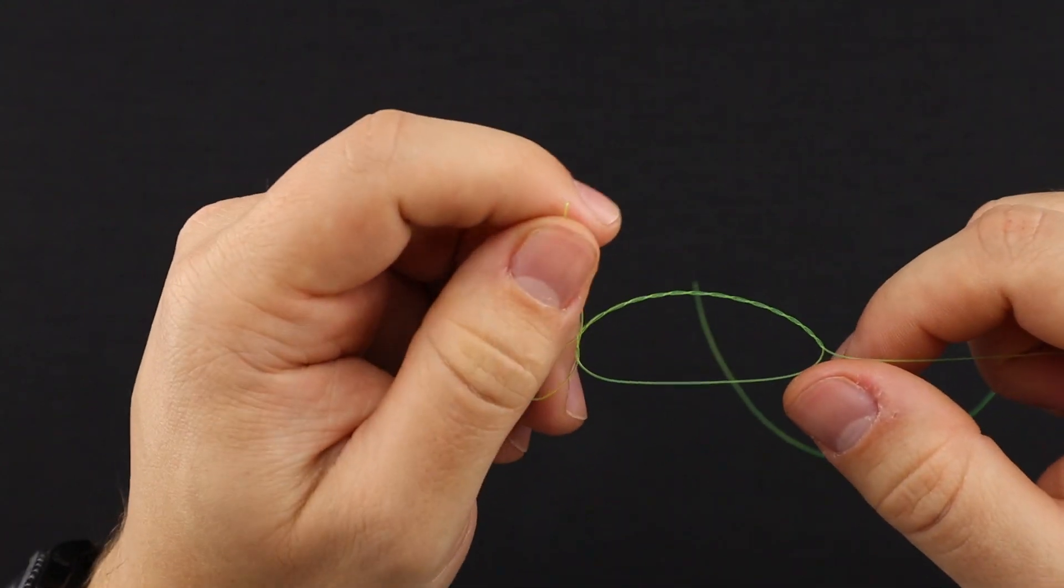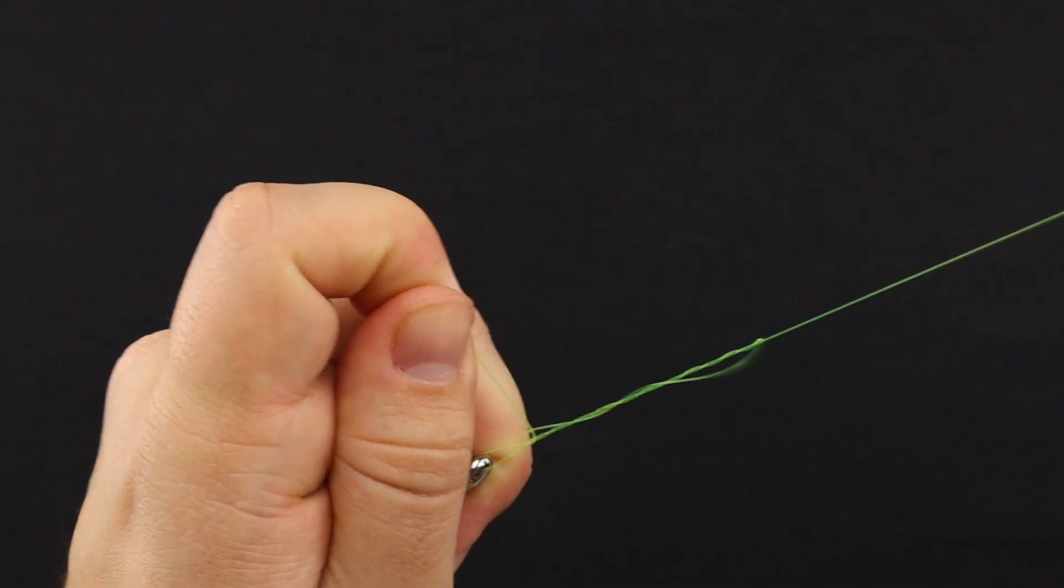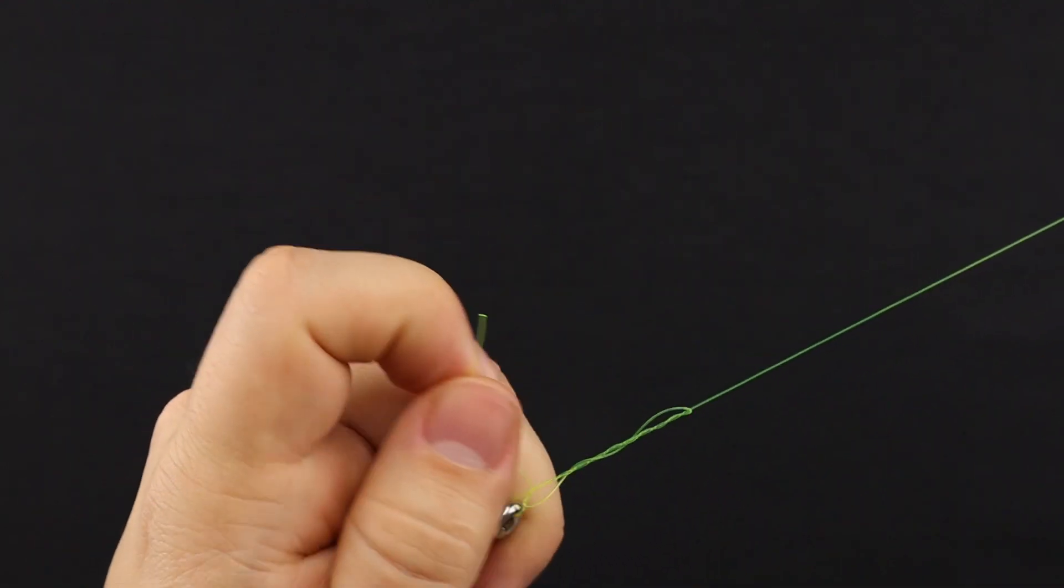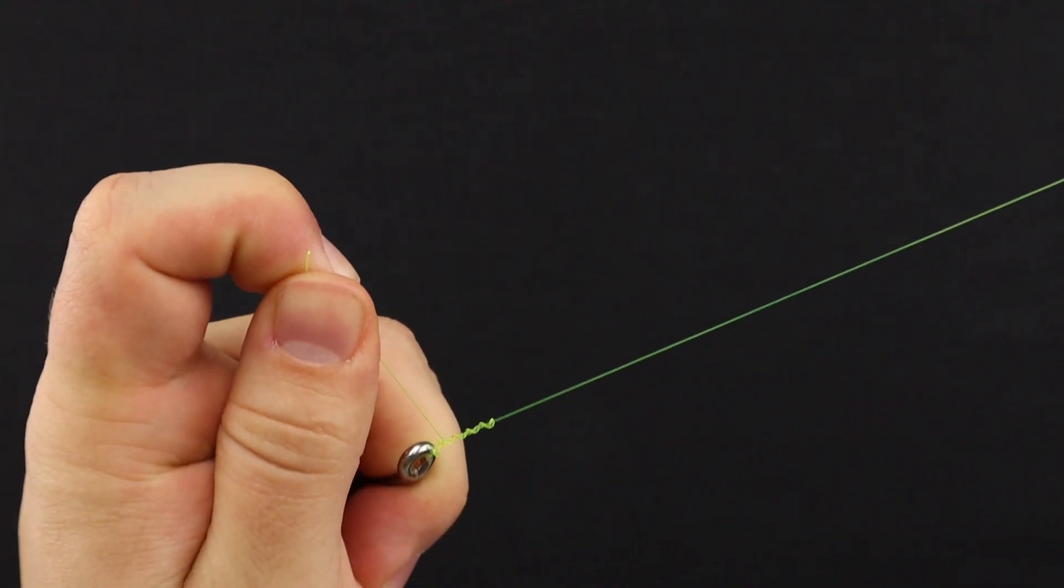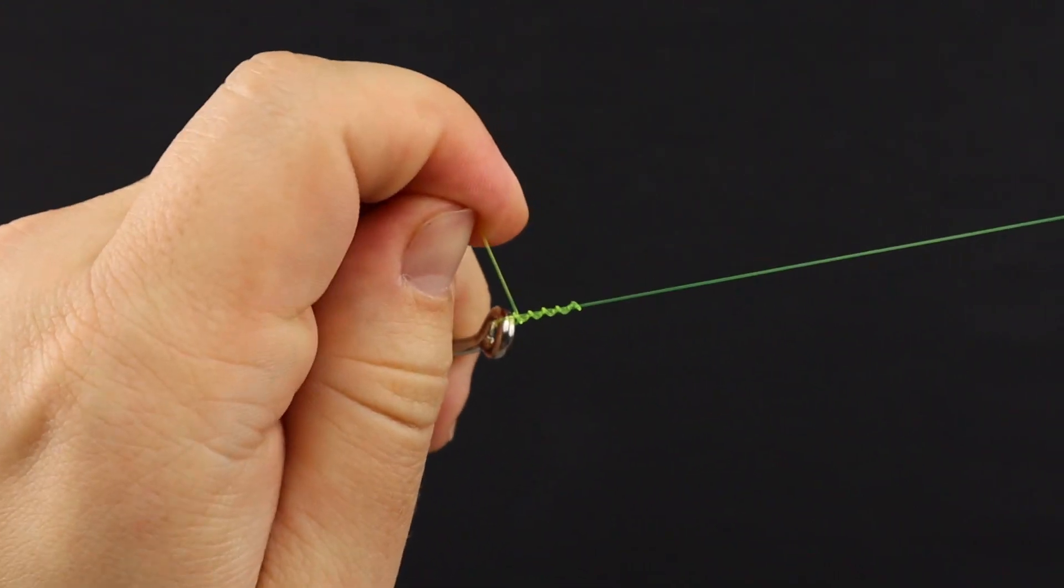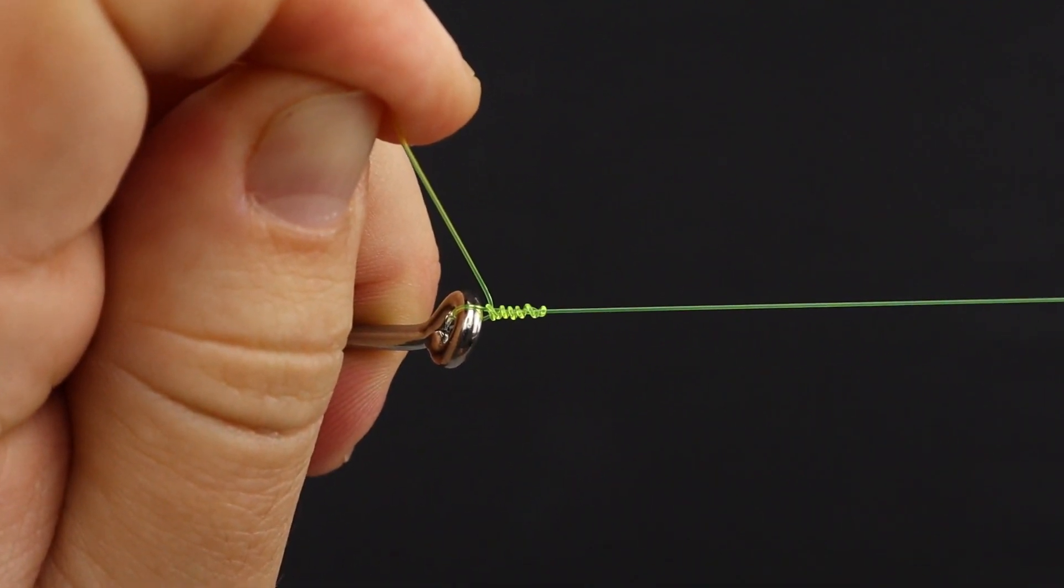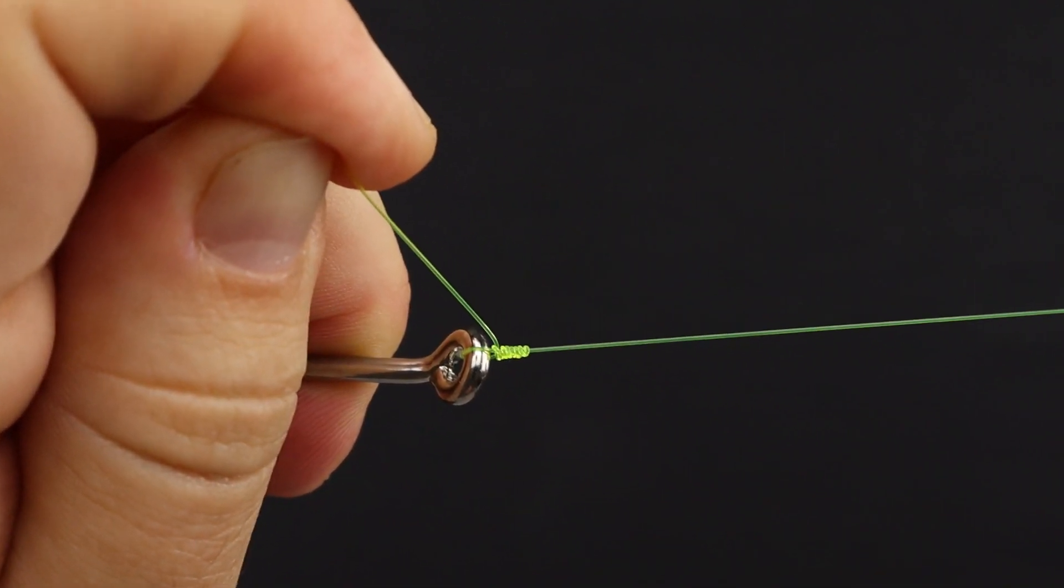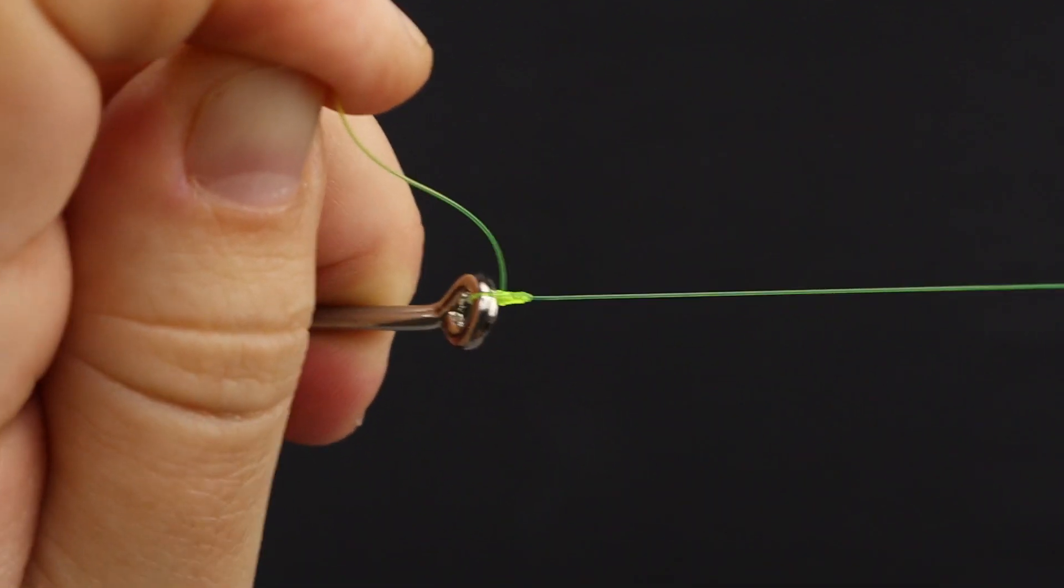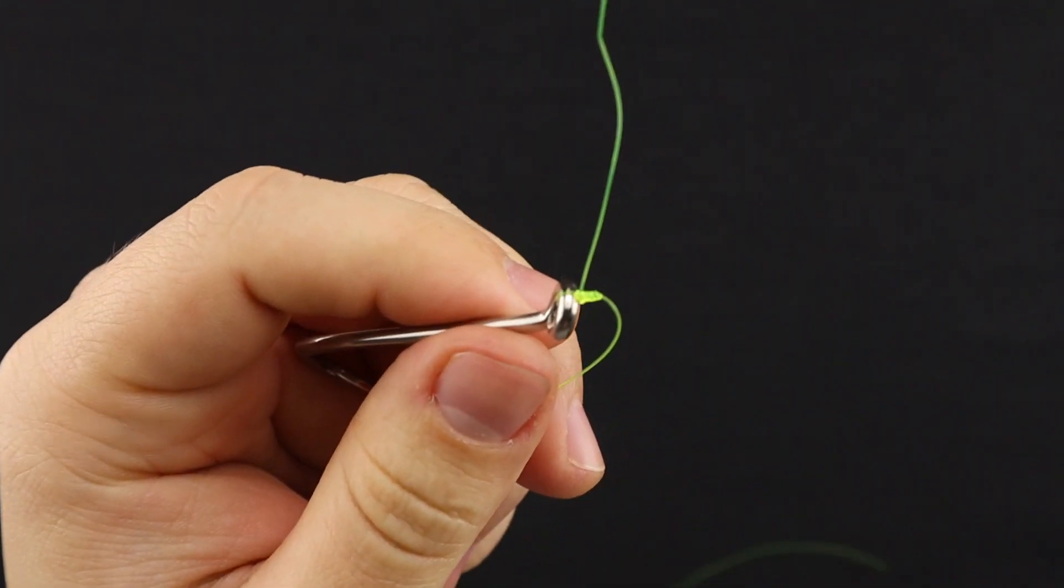Now with your left hand, keep tension on the tag end while you pull the main line down. This keeps snugging that up while keeping tension on the tag. Get it nice and cinched down. Great, now you have that tag end to cut off.